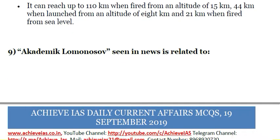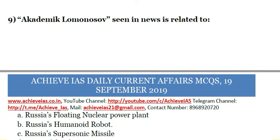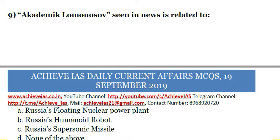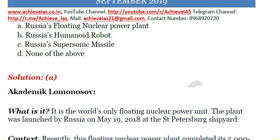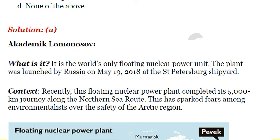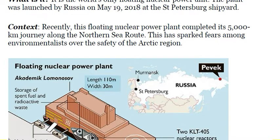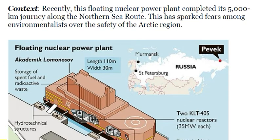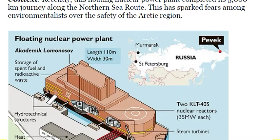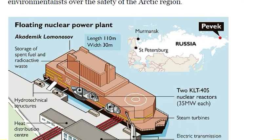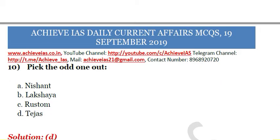Next question: Akademik Lomonosov seen in news is related to — A) Russia's floating nuclear power plant, B) Russia's humanoid robot, C) Russia's supersonic missile, D) none of the above. The answer is A — Russia's floating nuclear power plant. Akademik Lomonosov is the world's only floating nuclear power unit, launched by Russia on May 19, 2018 at the Saint Petersburg shipyard. This floating nuclear power plant completed its 5,000-kilometer-long journey via the northern sea route, sparking fears among environmentalists over the safety of the Arctic region.